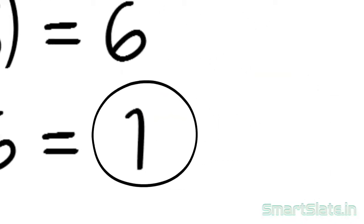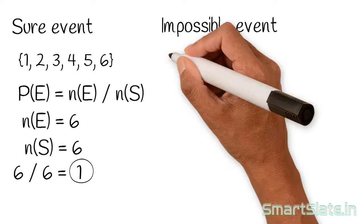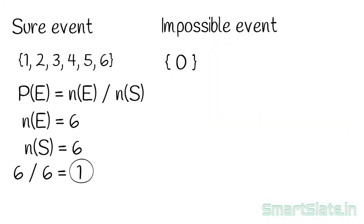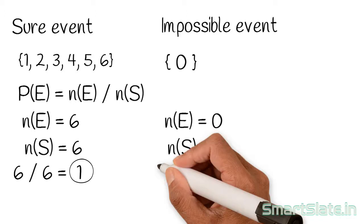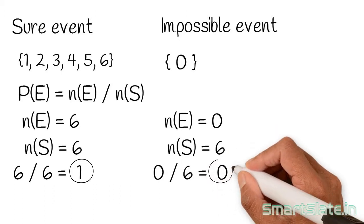Now let's calculate the probability of an impossible event. Consider getting a 0 — this is an impossible event. The probability is 0/6 = 0. Note: the probability of an impossible event is always 0.